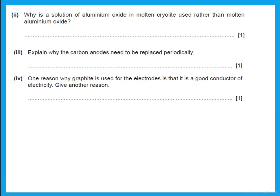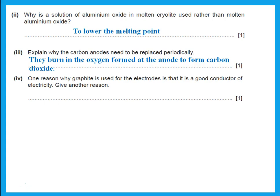Why is the solution of aluminium oxide in molten cryolite used rather than molten aluminium oxide alone? We add cryolite to lower the melting point of the aluminium oxide. Why do the carbon anodes need to be replaced periodically? They burn in the oxygen that is formed at the anode to form carbon dioxide gas, which escapes.